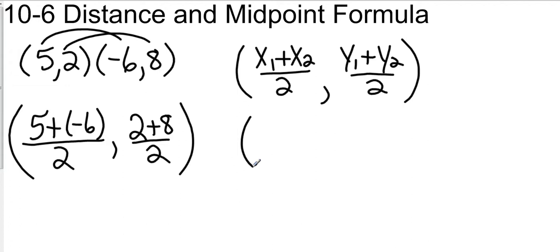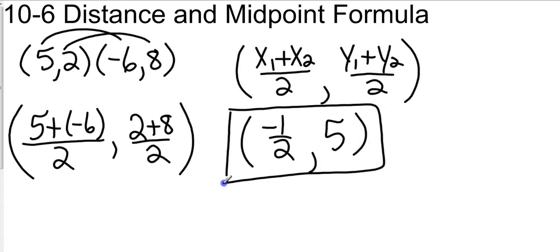Okay, so that's going to give me negative 1 divided by 2, which is just negative 1 half. And then 2 plus 8 is 10. 10 divided by 2 is 5. So I have a midpoint of negative 1 half, 5.